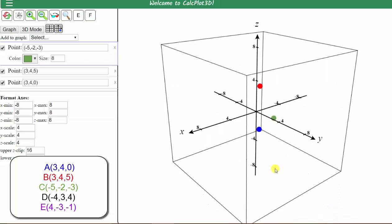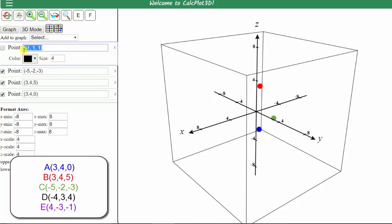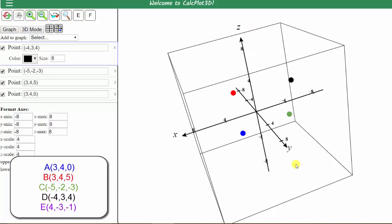The next order triple is (-4, 3, 4). Let's graph this point in black. Click the arrow, select point, enter the order triple. Again, (-4, 3, 4). The color is already black. Let's change the size to eight. Click graph. Let's rotate the view.